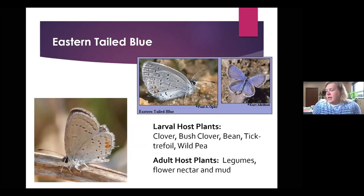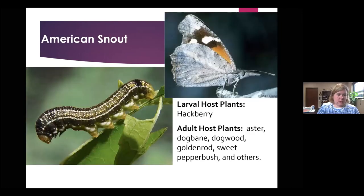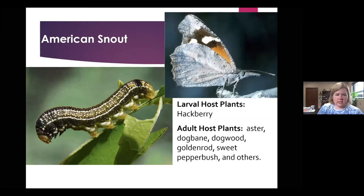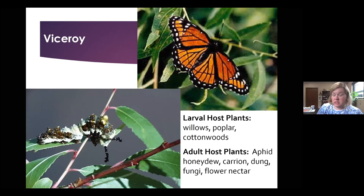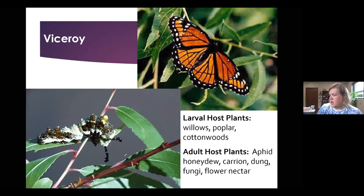Eastern tail-blues feed on beans, peas, and legumes. American snouts are fun because of their snout — they feed on dogbane, dogwood, goldenrod, and sweet pepperbush. The viceroy has a black bar across the back of its hind wings — that's how you tell it from the monarch. Its larvae feed on willows, poplars, and cottonwoods, and the larva looks like a piece of bird poop for camouflage. The adult viceroy also feeds on carrion, dung, fungi, and flower nectar. The question mark butterfly is named for the mark visible on its wings — larvae feed on elms, hackberries, and nettles, and adults feed on rotting fruit and tree sap.